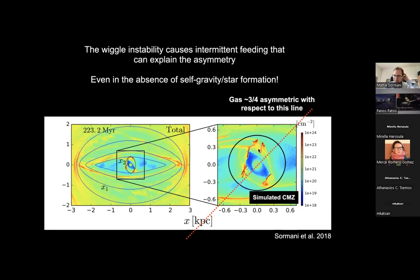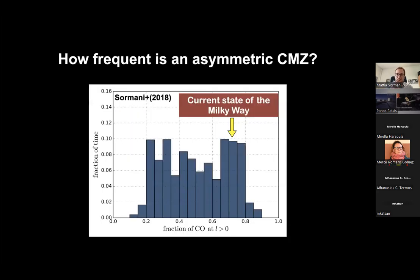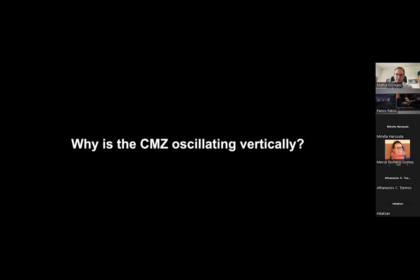The wiggle instability causes the bar shock to break into clumps, which accrete onto the ring and perturb it, generating disruption that makes the CMZ asymmetric. In simulations with very symmetric initial conditions, no self-gravity, no star formation, you naturally develop this asymmetry — roughly three quarters on one side and a quarter on the other, as in the Milky Way. This doesn't exclude that star formation, feedback, or the black hole cause further disruption, but you don't need these extra processes to explain the asymmetry.